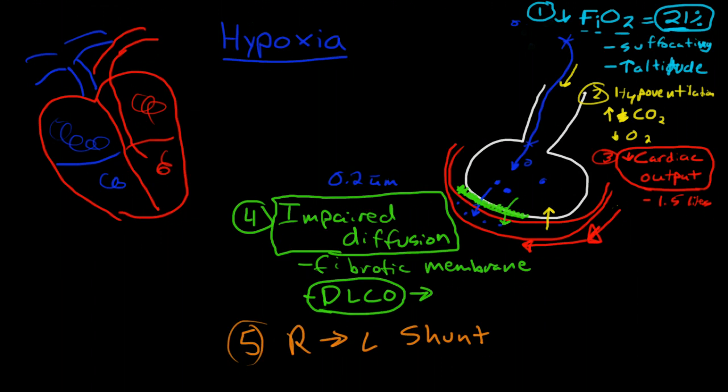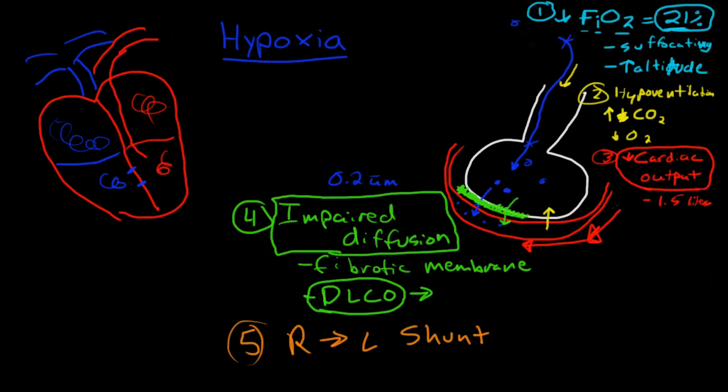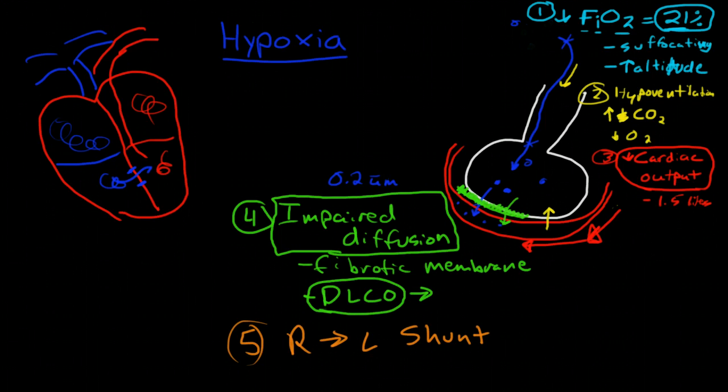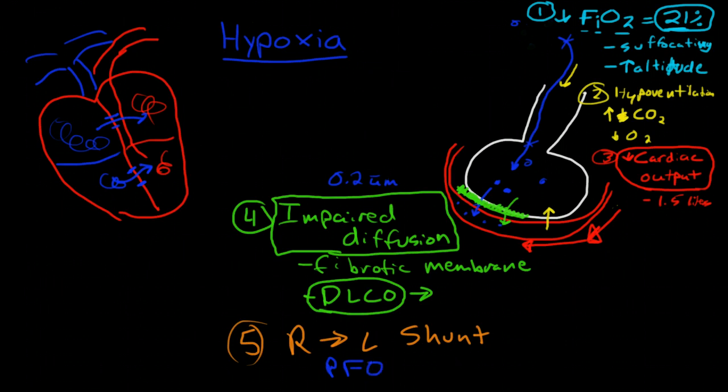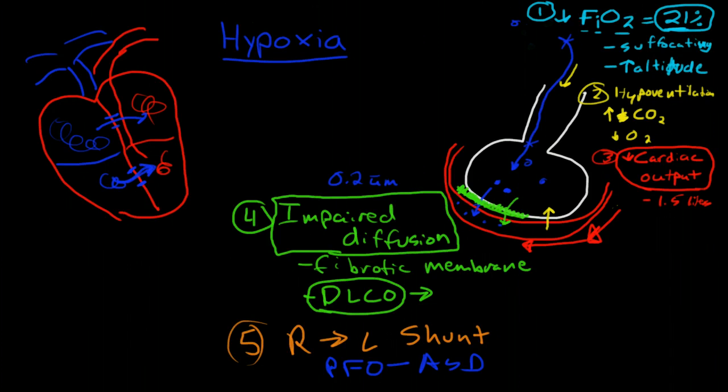Now, one type of shunt may involve an anatomical defect that causes the unoxygenated blood to mix with the oxygenated blood. So it may be a PFO, otherwise known as an atrial septal defect.